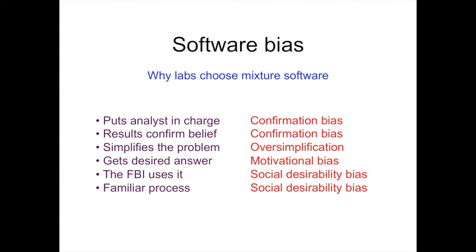There is also a software bias in why labs choose their DNA mixture interpretation software. Software that puts an analyst in charge or confirms their expert beliefs introduces confirmation bias. Software that simplifies the DNA problem by removing many possibilities introduces oversimplification bias. Software that lets analysts manipulate thresholds, parameters, and dropout values introduces motivational bias. And choosing software because the FBI uses it, or because it fits one's familiar current process, is a social desirability bias that has nothing to do with objective, accurate science.